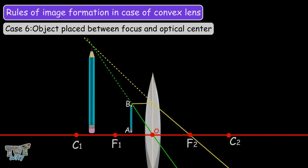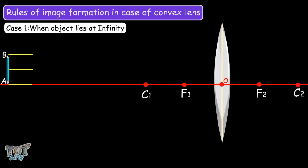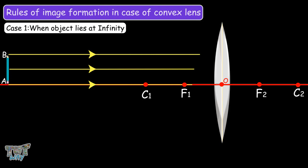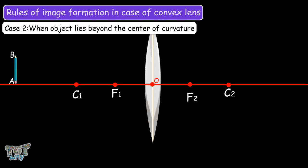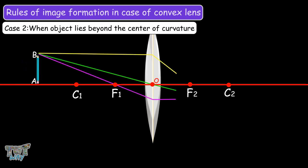We have learned image formation in the case of a convex lens across six different cases. Let's revise quickly. If the object is at infinity, the image is highly diminished, point-sized, real, and inverted. If the object is beyond C1, the image is between the focus and the center of curvature — diminished, inverted, and real.